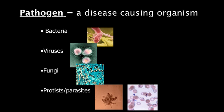Fungi are parasites that normally only infect the skin, and only get life-threatening if they infect the lungs. Athlete's foot, ringworm, and yeast infections are examples of fungal infections. Protist parasites can cause infections such as amoebic dysentery, malaria, African sleeping sickness, and giardia, which you can catch from drinking non-treated stream water.